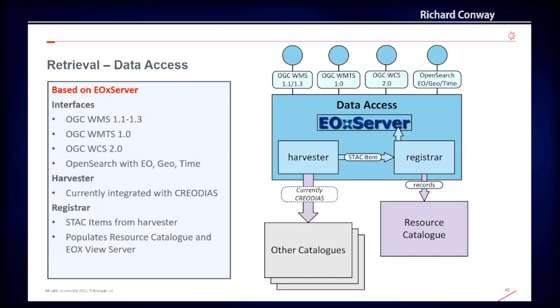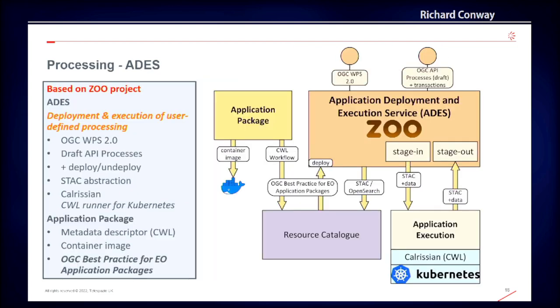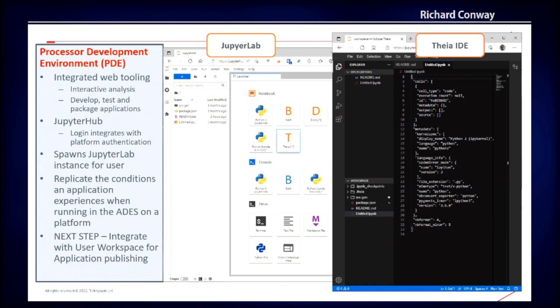Data services provide standards-based access to both platform and user-owned data. For our development system, these components are integrated with the CREODIAS open stack and EO data offering. The ADES provides an OGC API Processes interface for application deployment and execution. The application package describes the containerised processing application, which can be published through a resource catalogue for discovery and deployed to an ADES for execution. The PDE provides integrated web tooling to develop, test, and package apps for ADES execution, providing an environment that seeks to replicate the conditions and application experiences when running in the ADES on a platform.